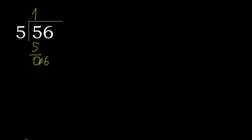Bring down — eliminate the 0 on this side, bring down 6. 5 multiplied by 2 is 10 — that is greater. Multiplied by 1 is 5. 6 minus 5 is 1. Next.